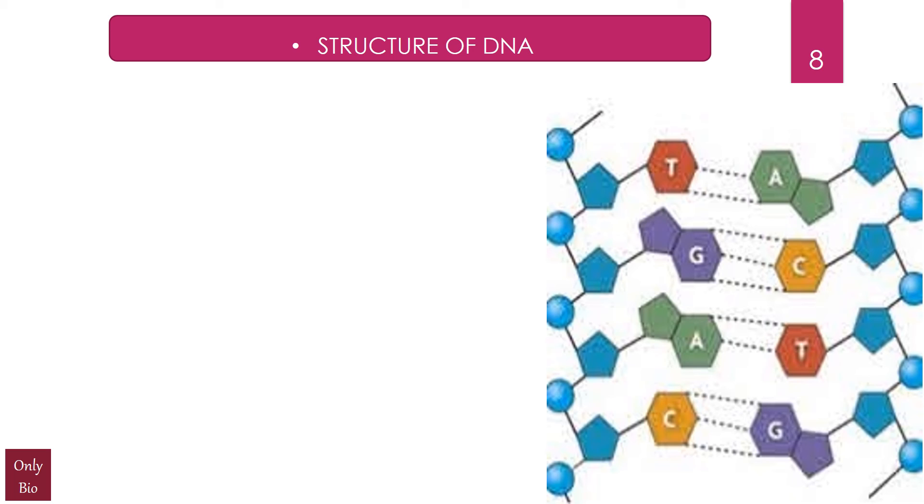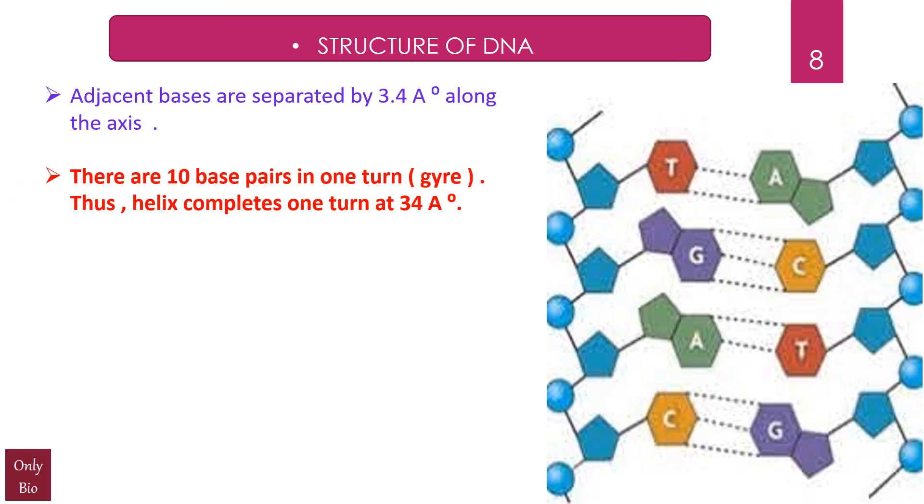Friends, on the screen you can see the bonds which exist between adenine and thymine as double weak hydrogen bonds—here it has been depicted by two dotted lines—and guanine and cytosine by three dotted lines. Adjacent bases are separated by 3.4 Angstrom units along the axis.